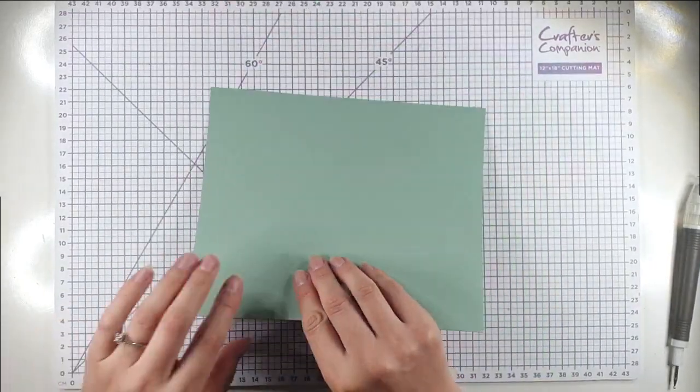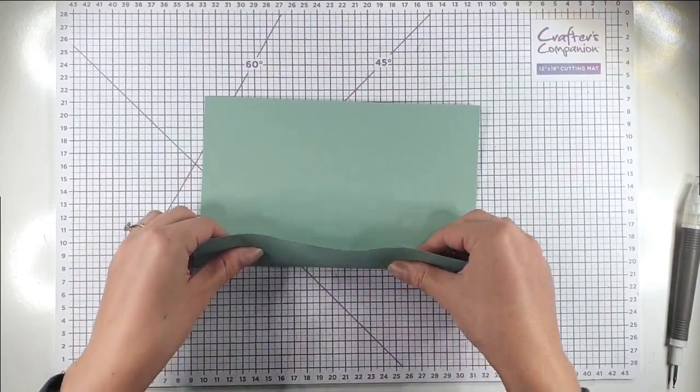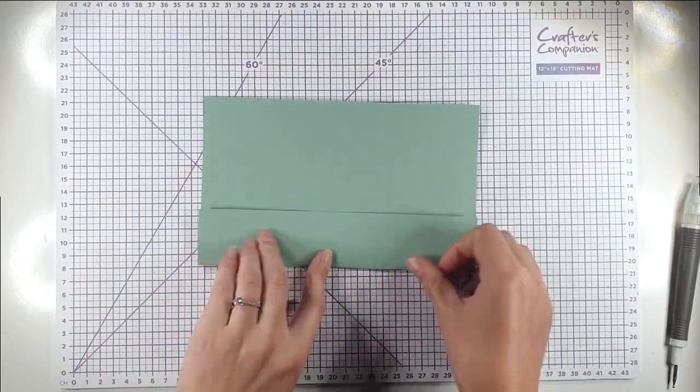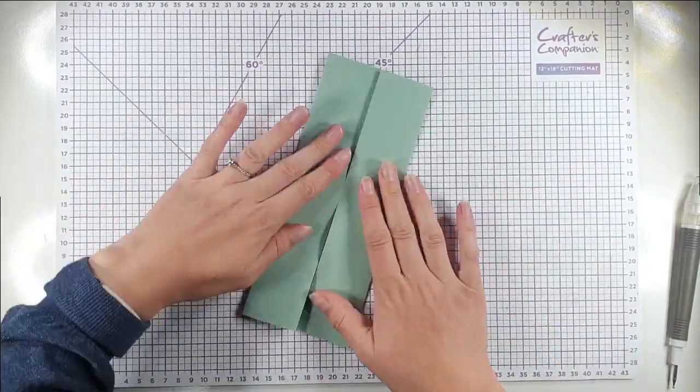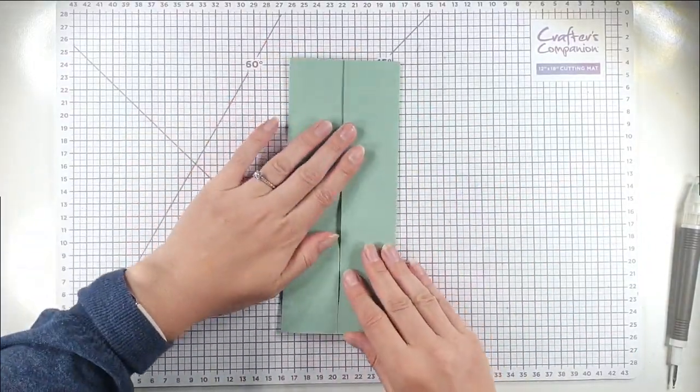Then I'm going to turn that into a gatefold, so I'm going to fold these into the middle. Now I want them to meet really nicely in the middle.